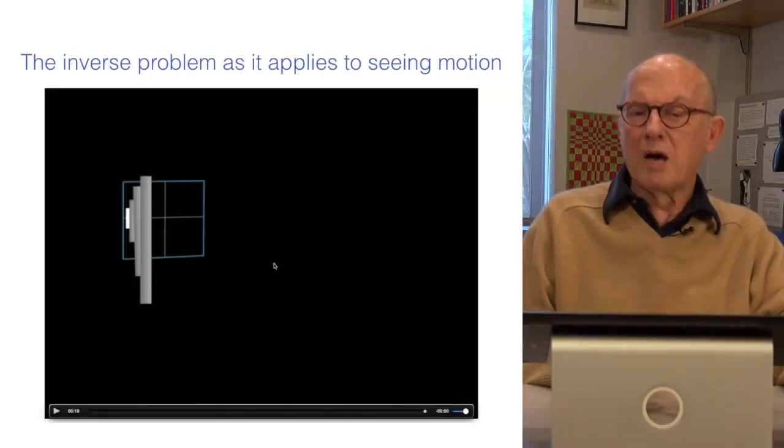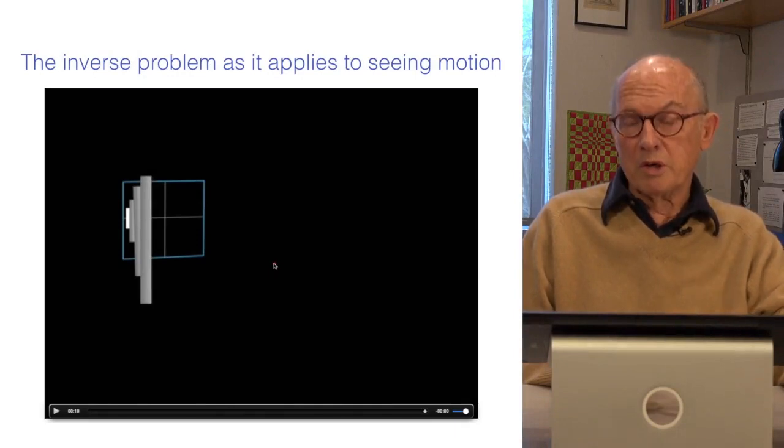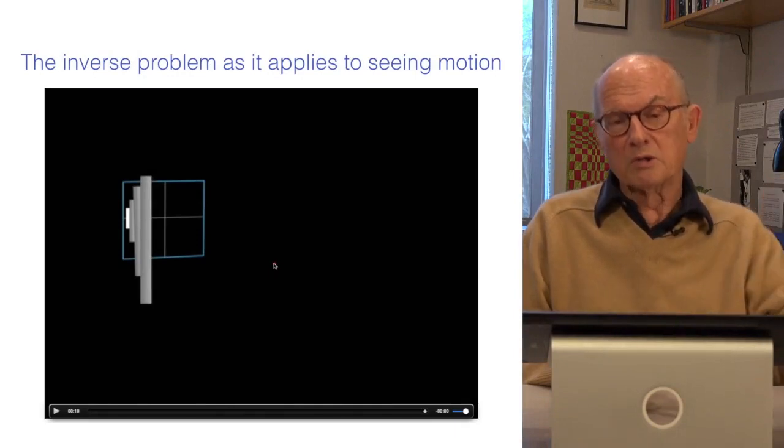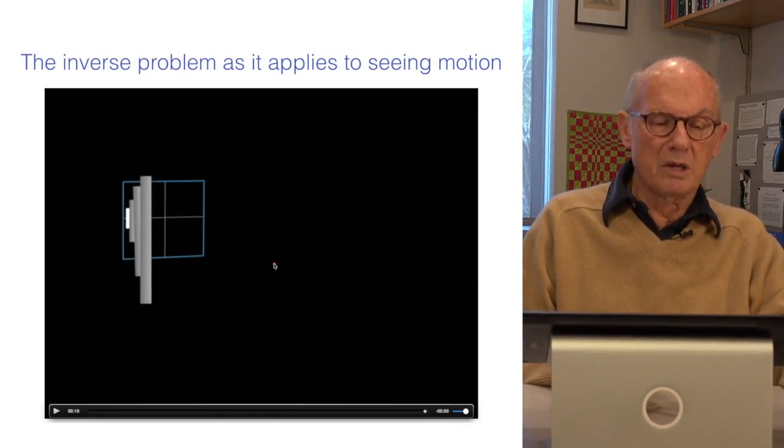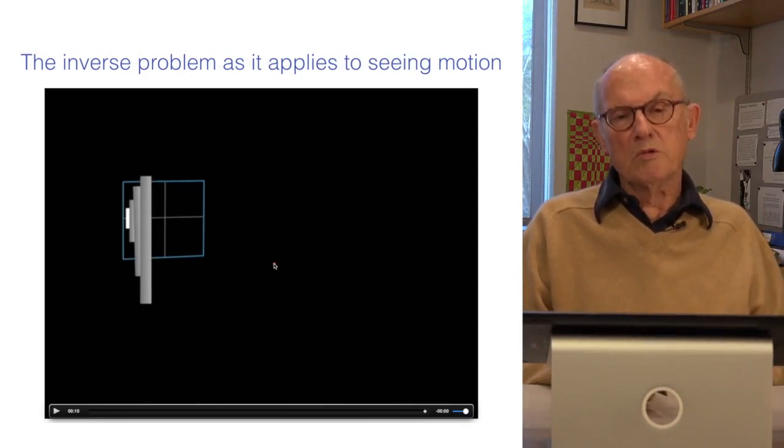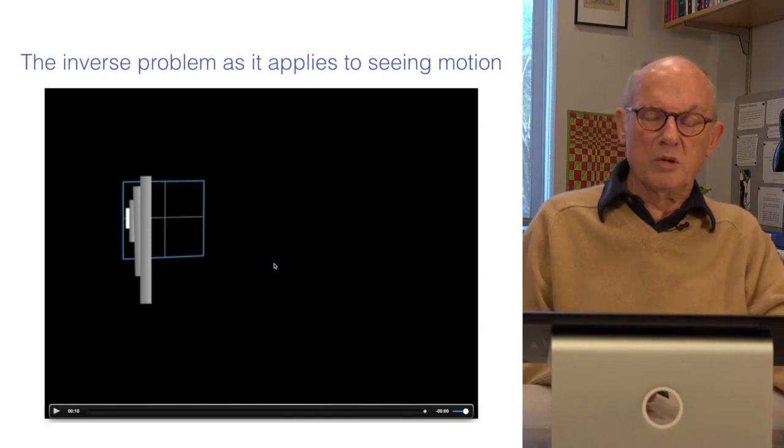So, here again, you can see the object moving across the retina is unchanged, but the objects that are generating it, let me show you this again, the objects that are generating it are very different. They're moving at different speeds, at different directions, and yet the stimulus on the retina is the same. So, how do we know what the motion, the real motion is that we need, as I say, to grab one of these rods, catch a ball, do anything that we see in response to moving objects? How is it that we can do that?